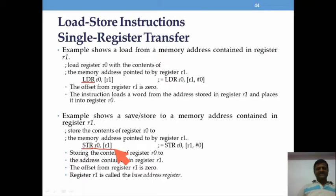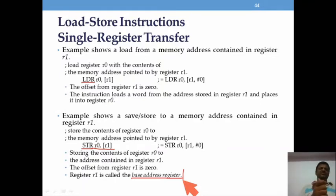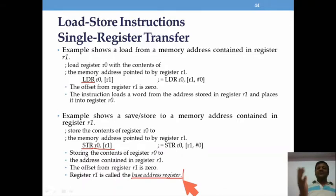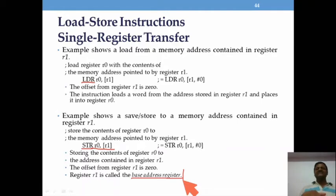The base address register — as you may recall from addressing modes studied in computer organization, including register addressing, immediate addressing, register indirect, base with index/offset, auto-increment, and auto-decrement — uses R1 as a pointer holding the beginning of an array. R1 holds the base address or starting address of that array, which is why it is called the base address register.